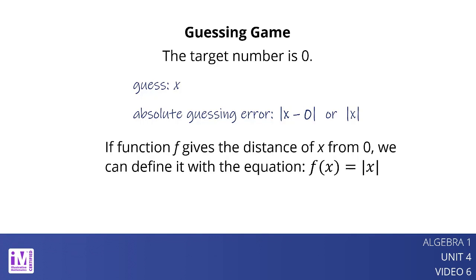If function f gives the distance of x from 0, we can define it with the equation f of x equals the absolute value of x. Let's look more closely at this function.